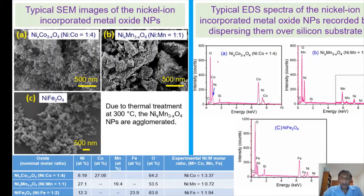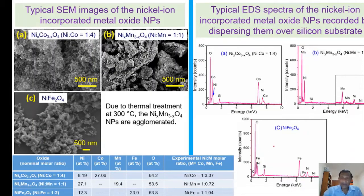In the EDS patterns presented on the right side, all the samples reveal their corresponding elemental signals — absolutely all present, nothing extra, only a small carbon peak corresponding to some carbon contamination. However, the nickel emission peaks and cobalt emission peaks overlap in the case of nickel cobalt. In the case of nickel manganite, the oxygen and manganese emission peaks are overlapping. In the case of nickel ferrite, such overlap does not appear — all the corresponding elemental peaks are well separated.